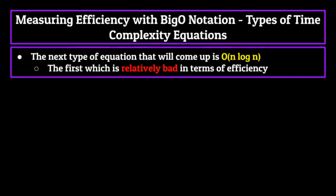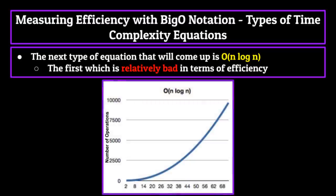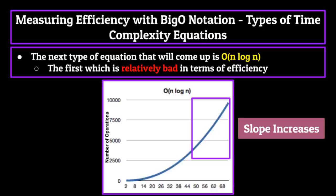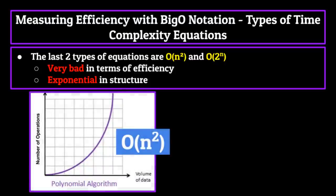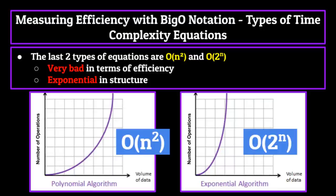The next type of equation that will come up is O n log n. This equation is the first that is relatively bad in terms of efficiency. The graph of volume versus operations shows a somewhat linear but increasing graph, meaning unlike O log n, it won't be better in terms of efficiency as the size of the data set increases. Instead, the slope actually increases as the volume of data does. The last two types of equation are O n squared and O two to the n. These are both incredibly inefficient equations which should be avoided if at all possible, because they are both exponential in structure. The larger the data set that you use, the more inefficient they will become. While there are more time complexity equations that exist, such as O n factorial, the data structures we'll be talking about will never have time complexity equations that exist outside of the five we've just covered.